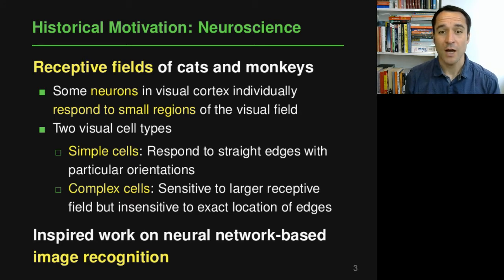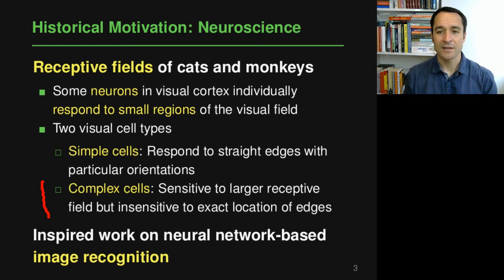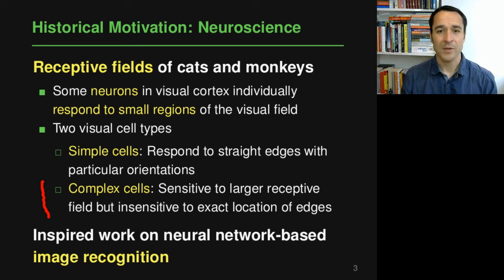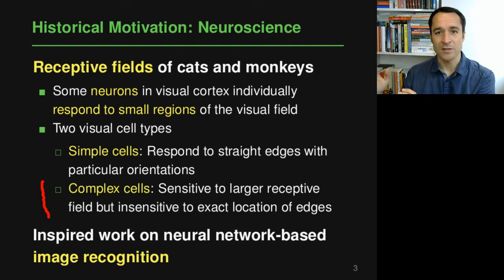It specifically turned out that there are two kinds of visual cell types. On one hand there are simple cells that correspond to specific parts of the visual field — for example, they respond to straight edges with particular orientations that appear in the visual field. On the other hand there are complex cells that are not sensitive to these small particular features but are sensitive to larger receptive fields and can see larger objects or larger parts of the visual field. Interestingly, these complex cells are insensitive to the exact location of what they are seeing — they can recognize an object no matter where it appears.